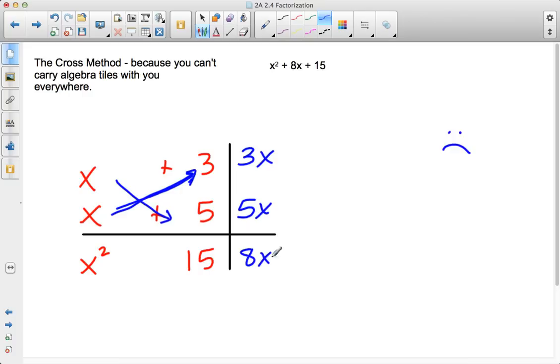So now when I write my pairs in order here, my terms, I get x² + 8x + 15. And I look back up on top. I see my terms match. So what we're going to do is change this into this, because what I've seen, I have properly factored x² + 8x + 15.